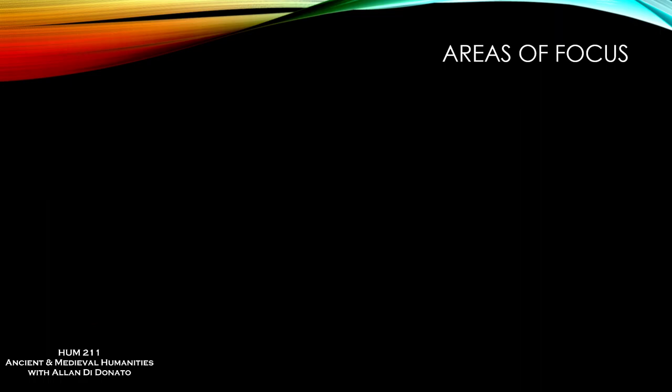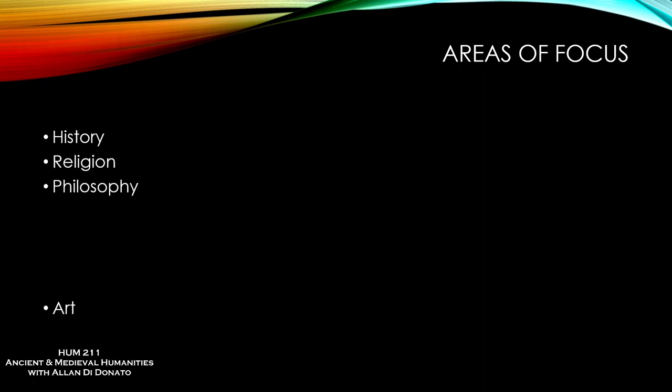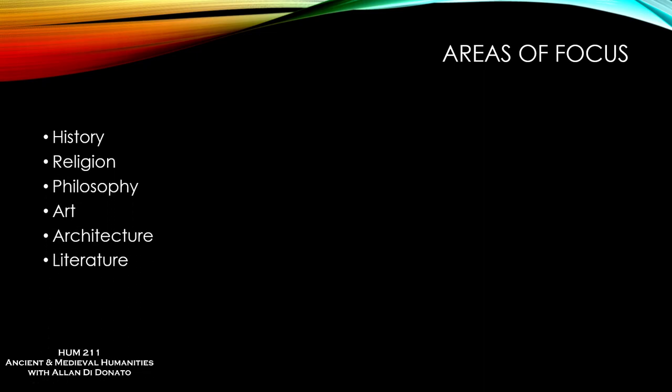Let's look at the areas of focus for the semester. Six basic areas: history, religion, philosophy, art, architecture, and literature — though obviously in a cursory way. It's an introduction to some of these things with restricted time periods and cultures. You could take an entire course on just history, or even just Roman history — and at grad school, an entire semester on just one portion of Roman history.